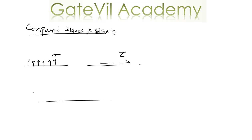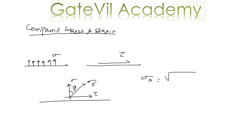But in many instances you can have both direct stress as well as shear stress on the plane. We will not have a resultant direct or tangential stress but a resultant stress which will be at an angle phi to the normal on the plane on which it acts. This resultant will be equal to the square root of sigma squared plus tau squared, and the angle phi equals tan inverse of tau by sigma.